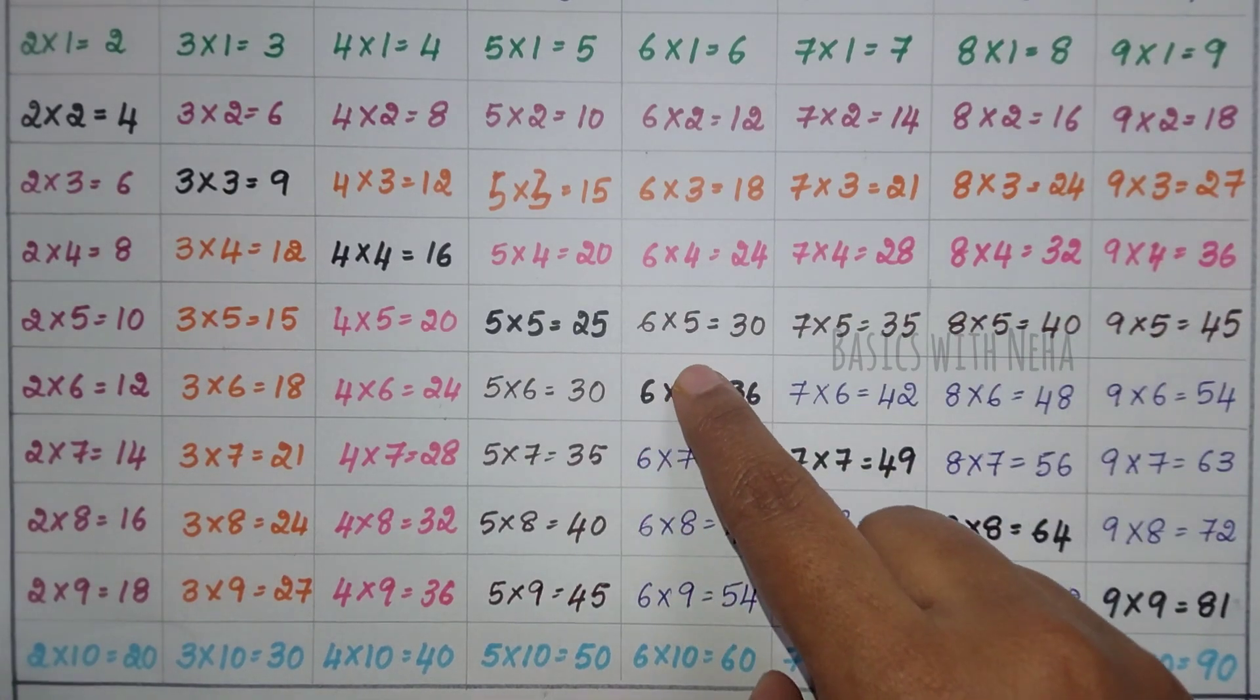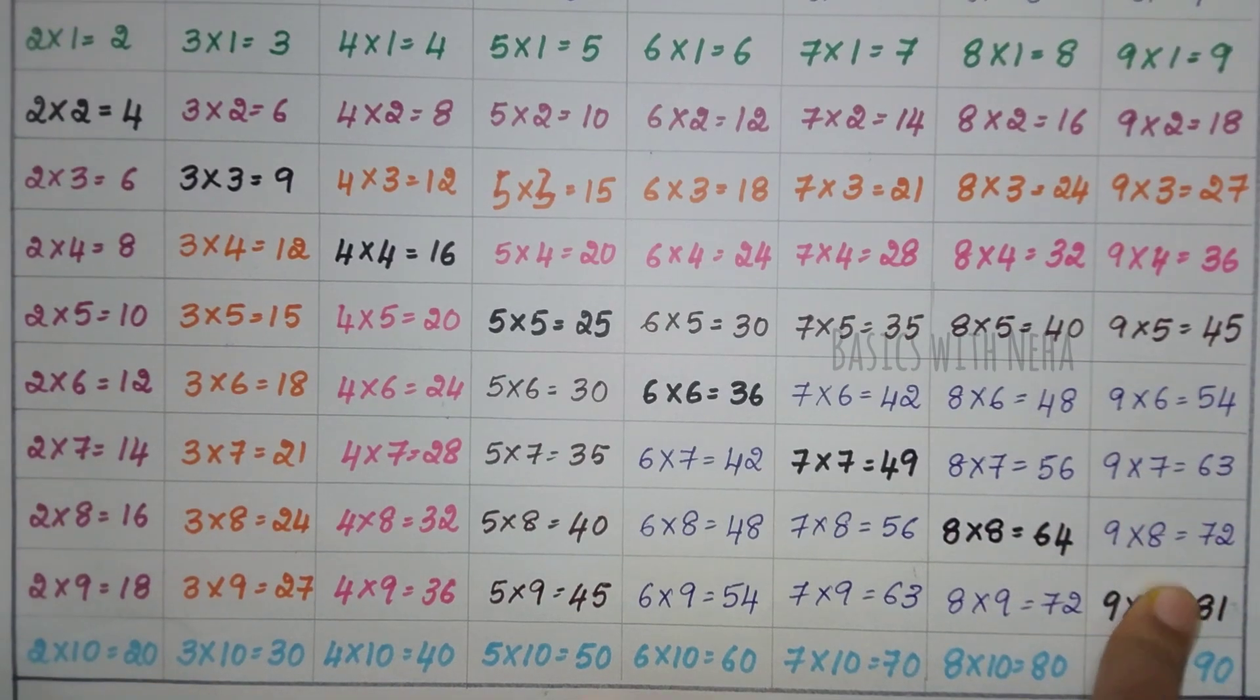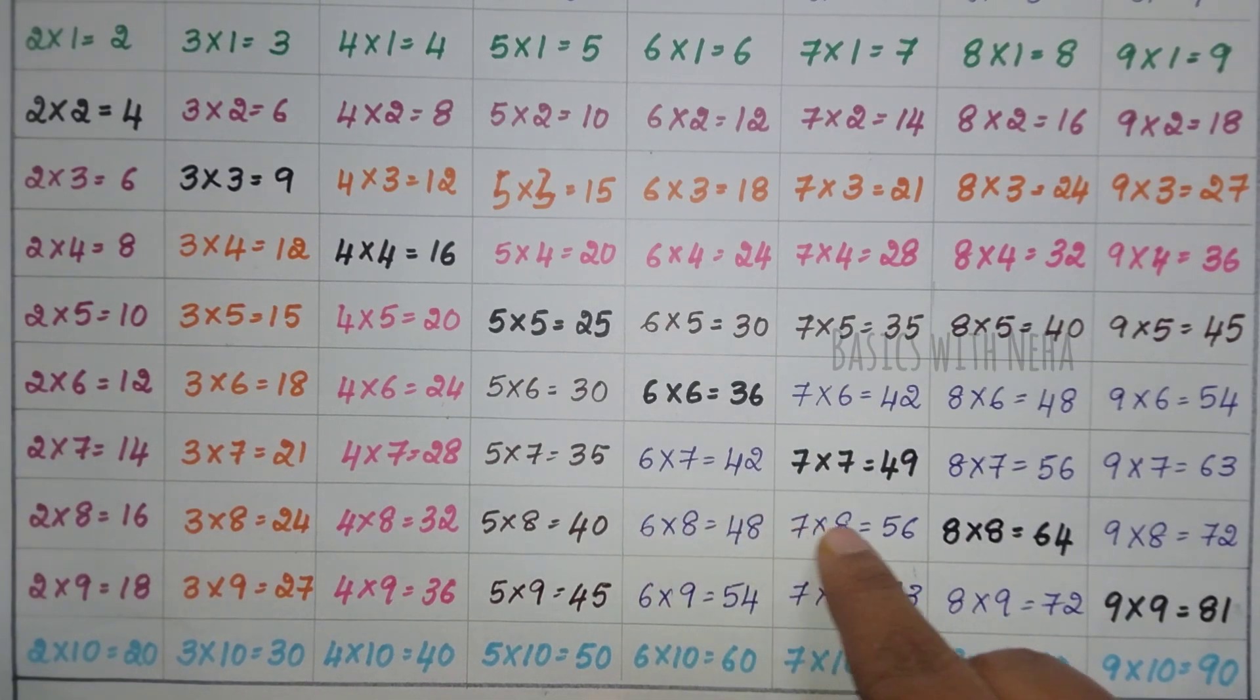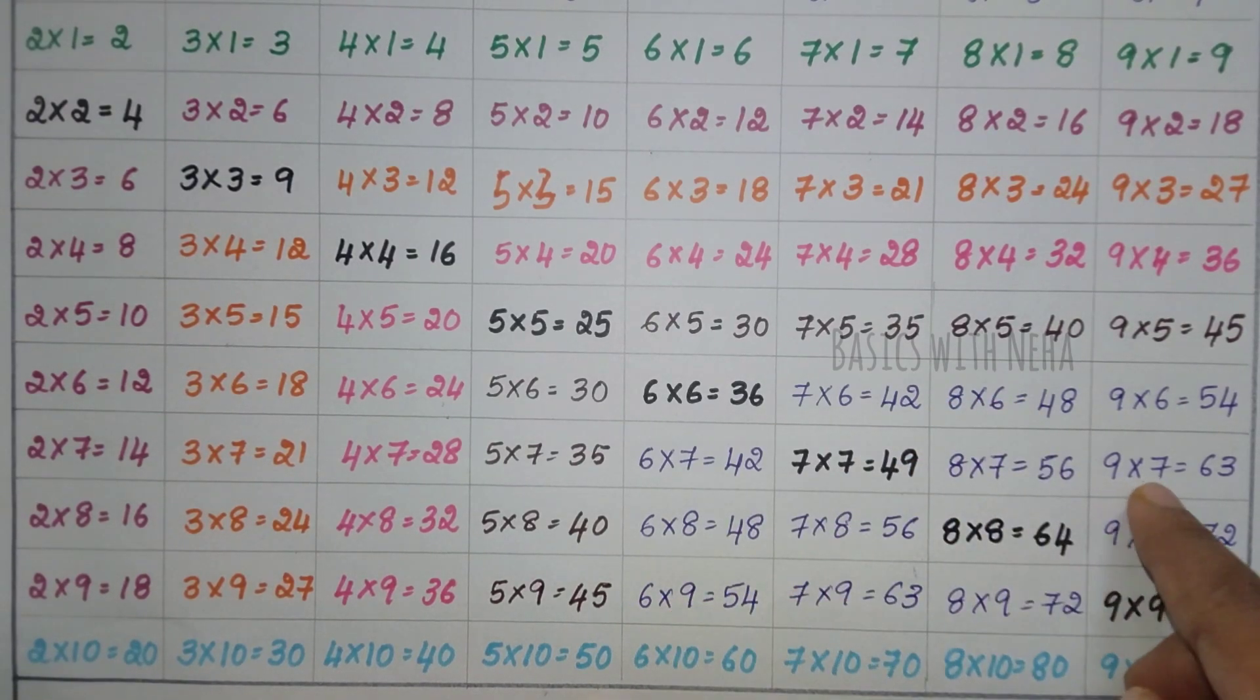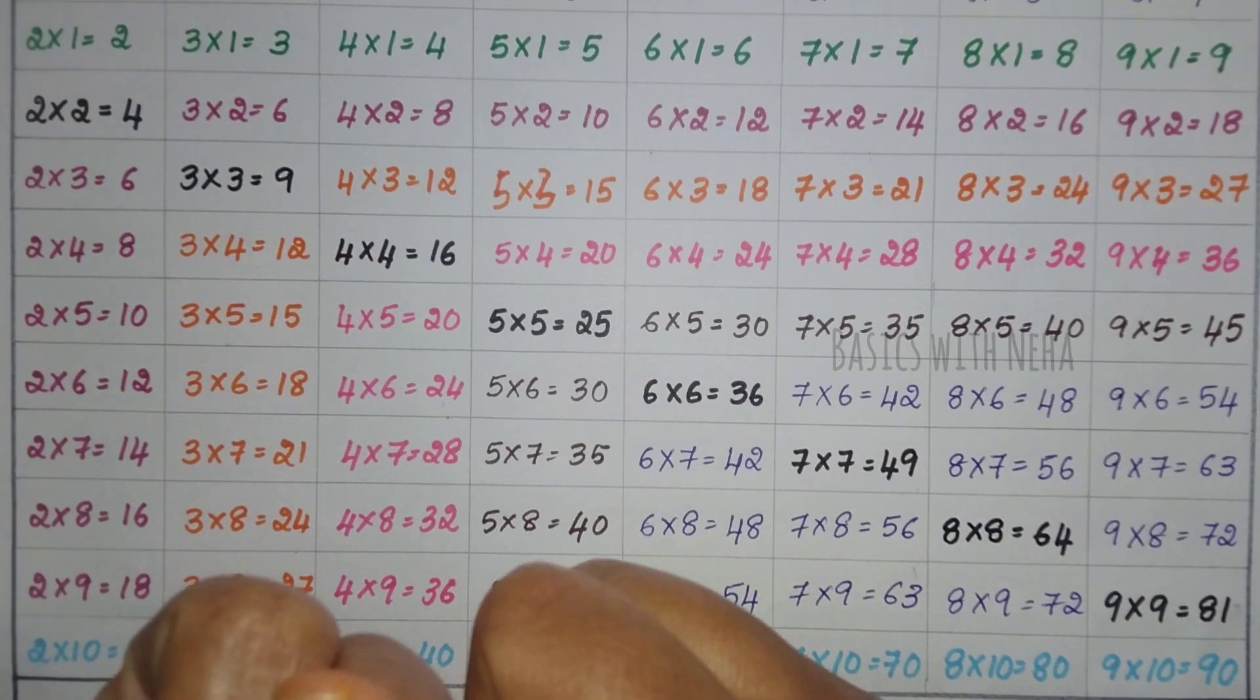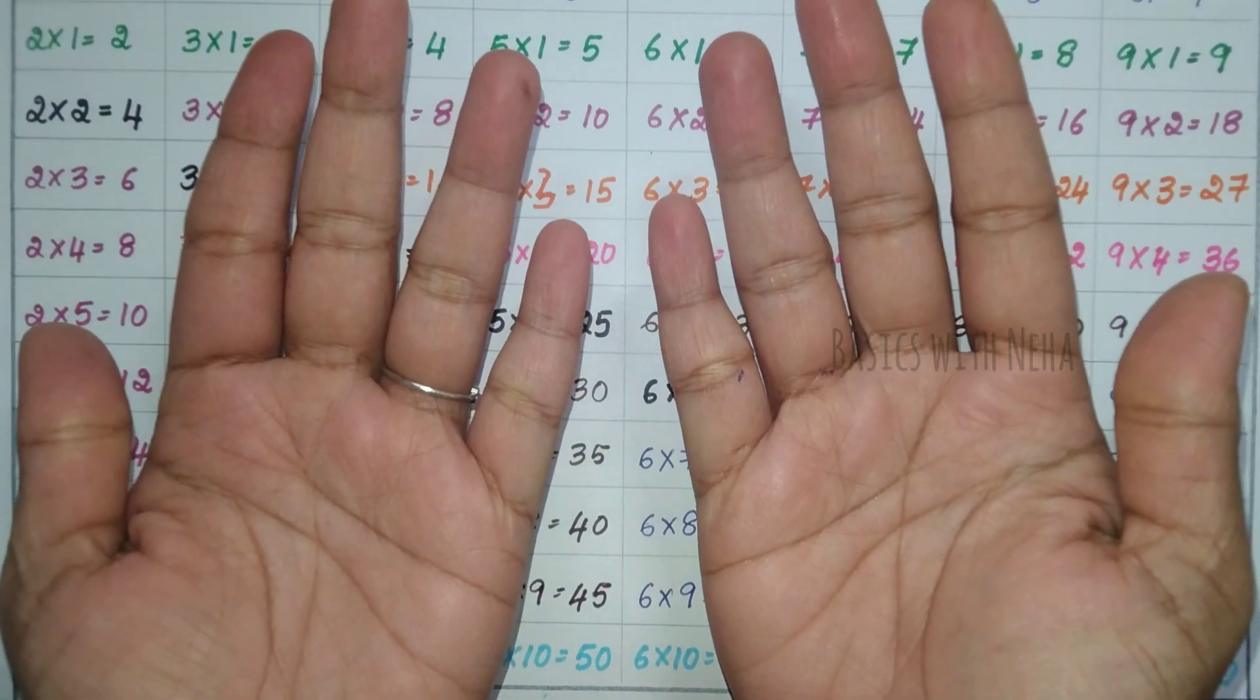Now, how do we do this? How do we do this part of the tables? We will do it using the finger method. So you have to open your 10 fingers like this.